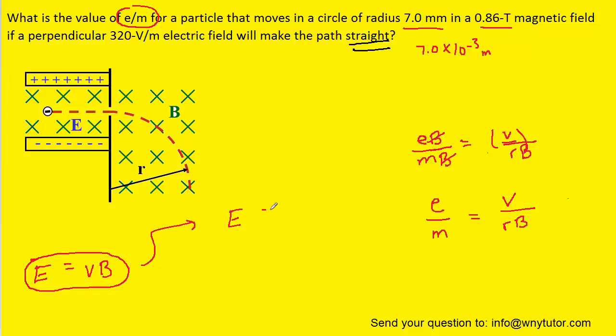And so let's return to this equation, and what we can do is actually solve that equation for the speed by dividing both sides by the magnetic field. And so we can see that the speed is equal to the electric field divided by the magnetic field. Let's substitute that expression in for the speed over here.